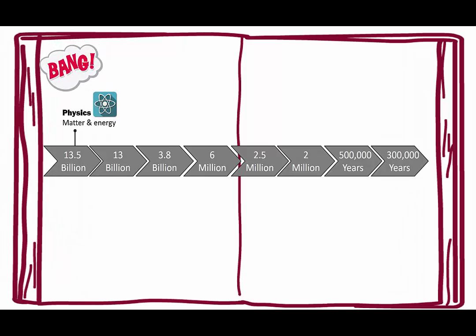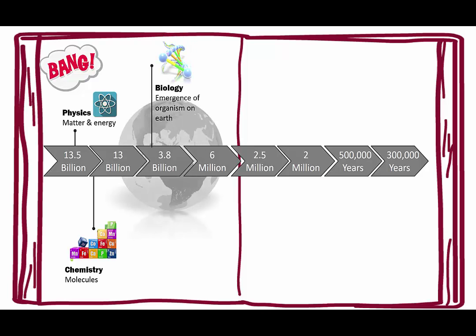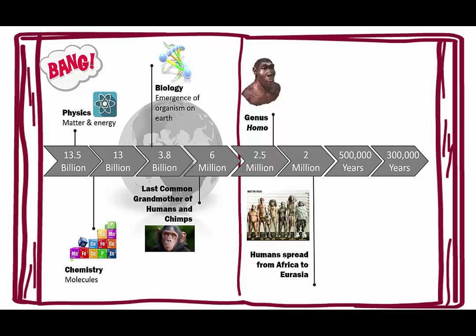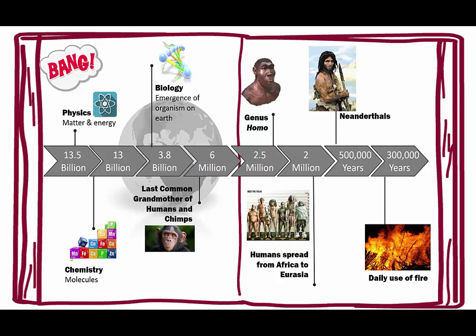He starts by giving us a timeline: from 13.5 billion years ago when we had physics, to 13 billion years ago when we had chemistry, to 3.8 billion years ago when we had biology and the emergence of organisms on Earth. Six million years ago he talks about the last common grandmother of the humans and chimps. 2.5 million years ago was the genus Homo. Two million years ago humans spread from Africa to Eurasia. 500,000 years ago we saw the evolution of the Neanderthals. 300,000 years ago was the daily use of fire, and between 300,000 and 200,000 years ago Sapiens themselves evolved in East Africa.